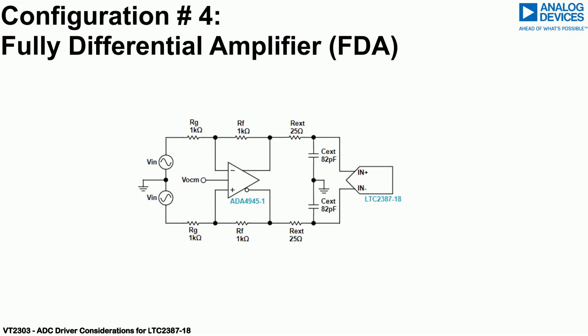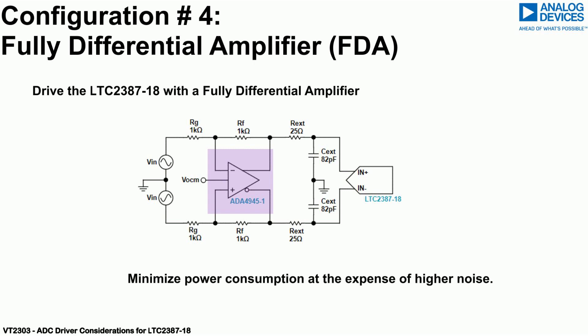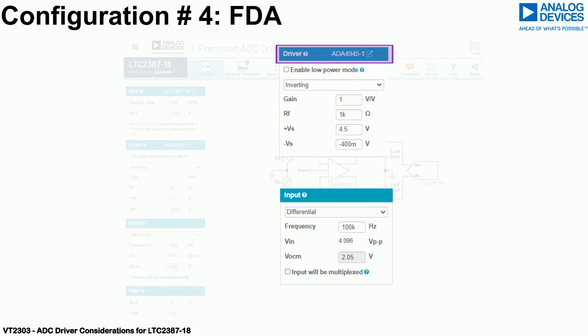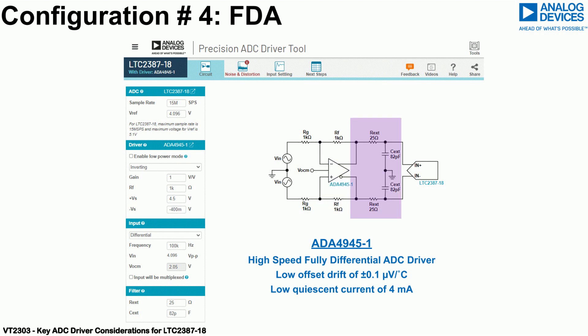The fourth recommendation is to use a fully differential amplifier, FDA, to drive the LTC 2387-18 when power consumption is a concern. Select the ADA 4945-1 fully differential amplifier from the list of recommended amplifiers and set the input as differential. The ADA 4945-1 has a quiescent current of just 4 mA. Remember to change the input to differential and the frequency to 100 kHz. The circuit shows the ADA 4945-1 configured in an inverting configuration, with its output connected to the RC filter, which then connects to the LTC 2387-18.